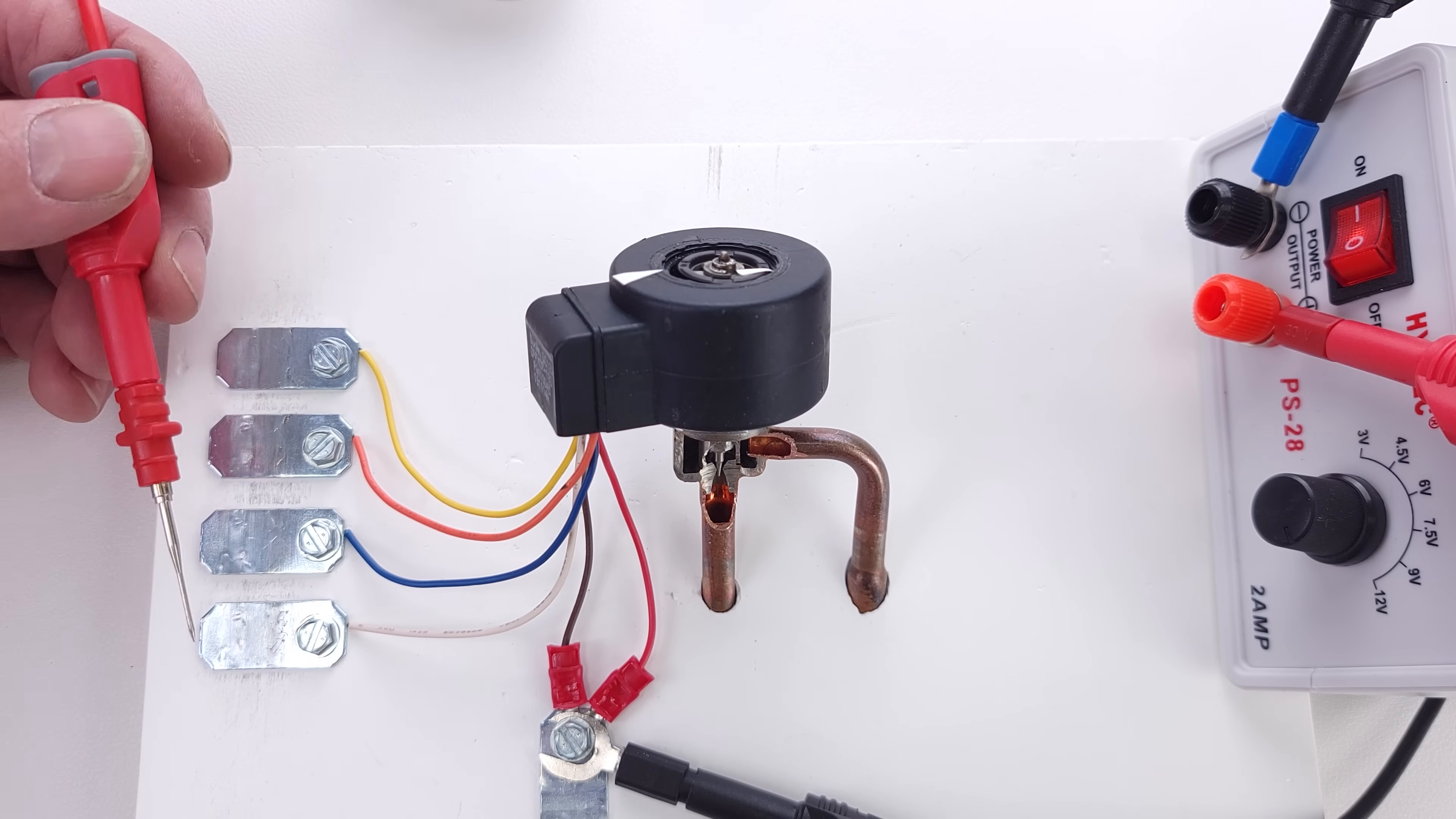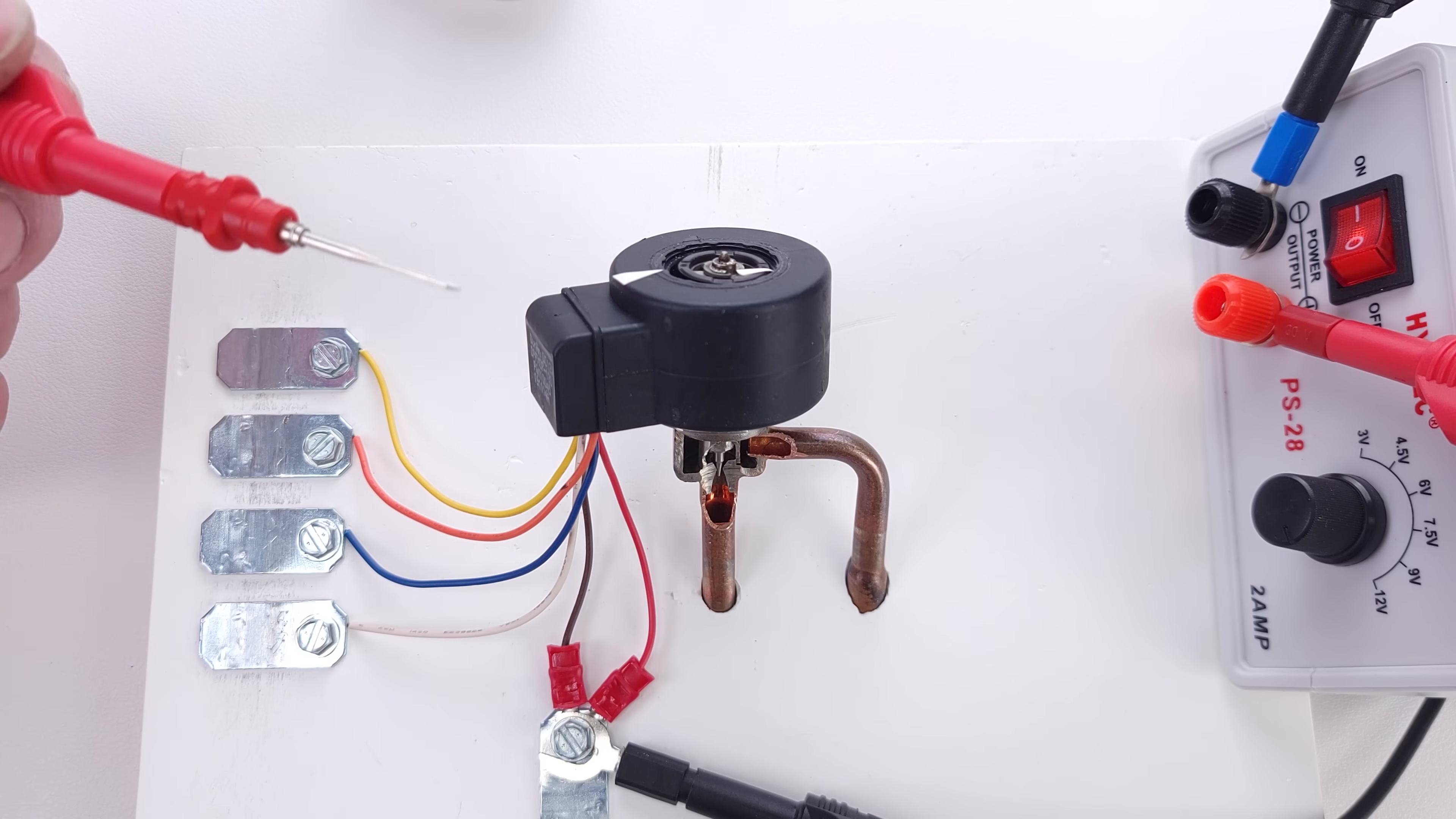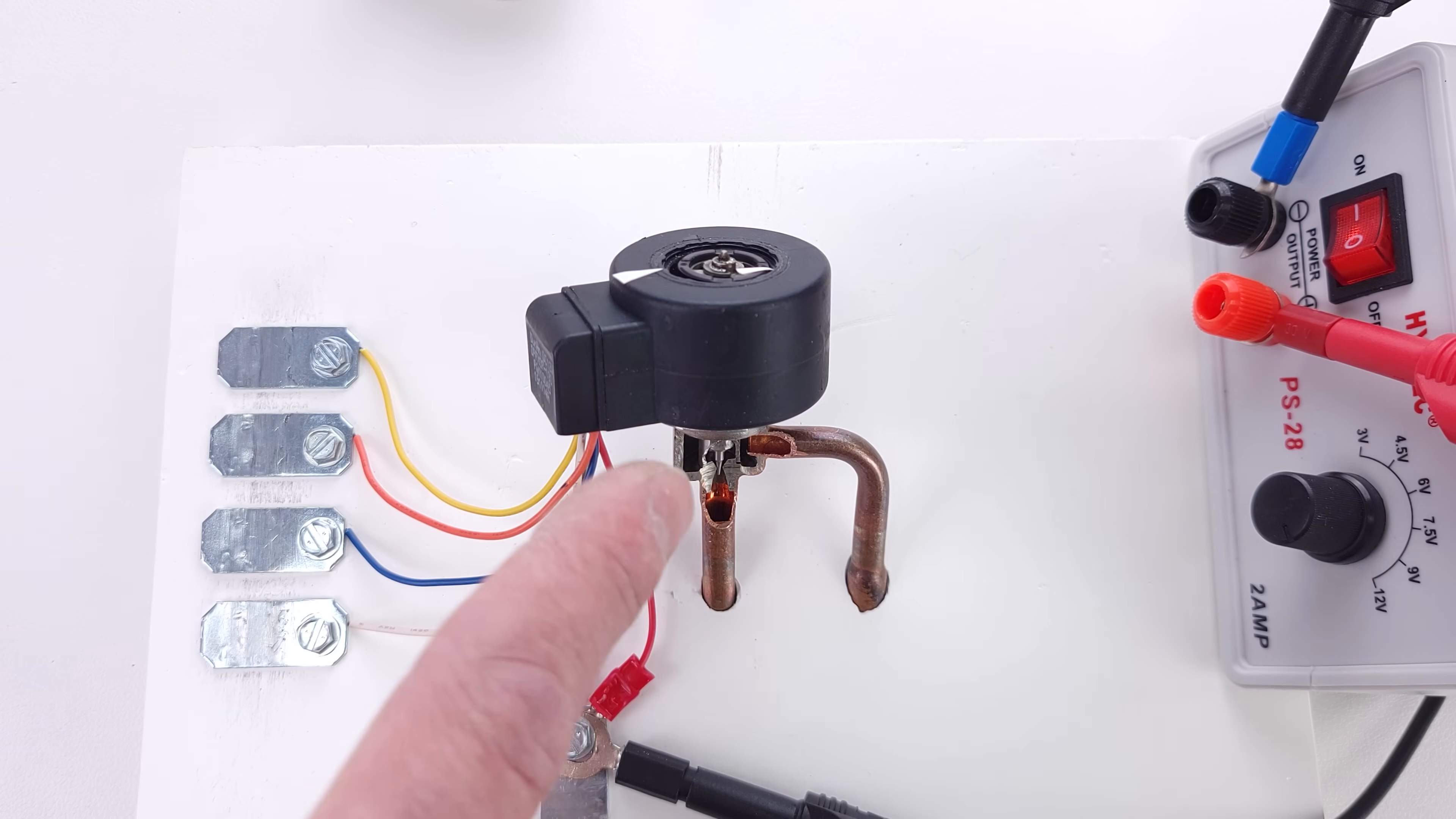Anytime a mini-split system starts up, you're going to hear it go click, click, click, click. Then after it fully closes, you're going to hear another set of clicks. That is the EEV on a mini-split system making that noise. The circuit board in the mini-split is trying to determine what position the pin is at. It fully seats it upwards and then fully seats it downwards in order to know where the pin location is.